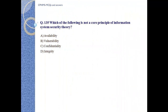Question number 135. Which of the following is not a core principle of information system security theory? A) Availability; B) Vulnerability; C) Confidentiality; D) Integrity.